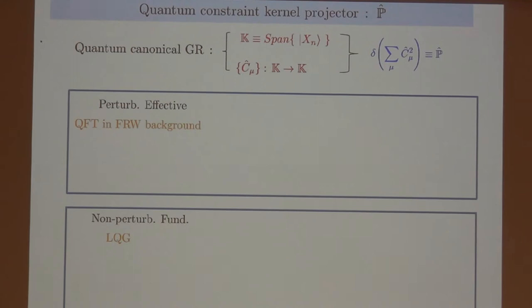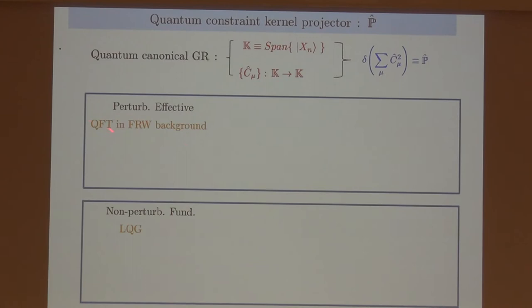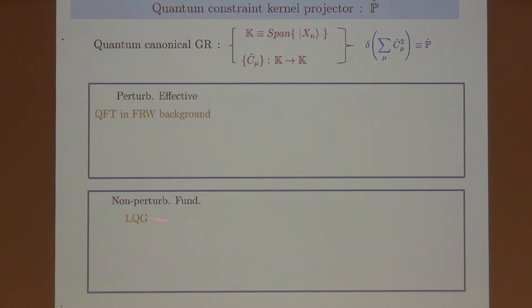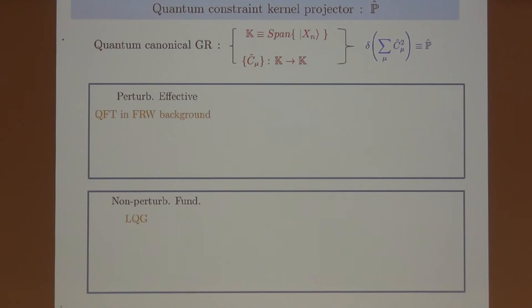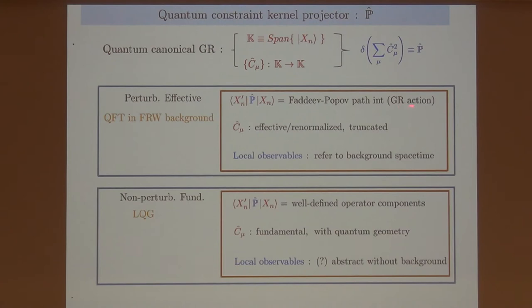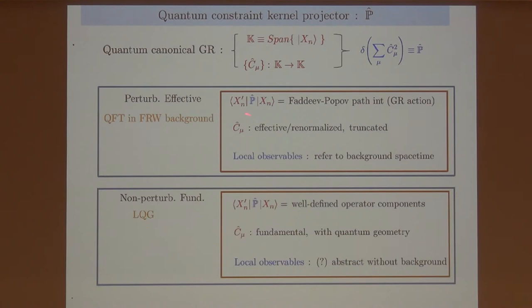For the effective theory, for example, we have the traditional quantum geometrical dynamics that uses the quantum field theory approach to describe the quantum fluctuation of the universe around a given space-time background. For fundamental theory, I will here refer to loop quantum gravity as an example. So for the effective theory, the rigging map elements are computed using the Fadeev-Popov path integral using the action of general relativity. And here, the underlying constraint, as well as the path integral itself, is an effective object that should be viewed under renormalization to a low energy scale.